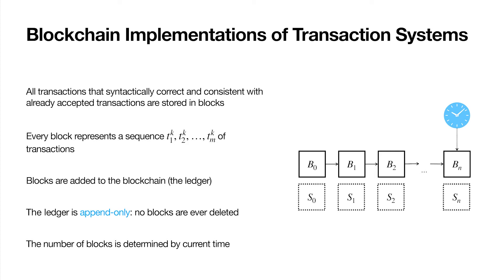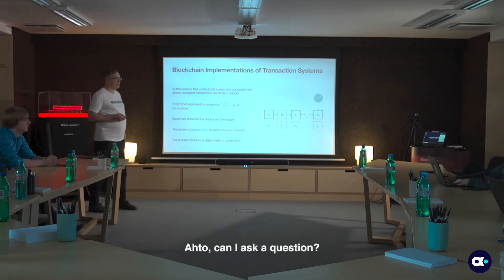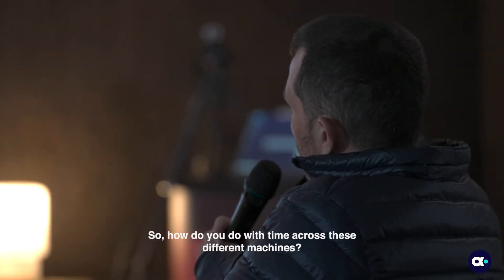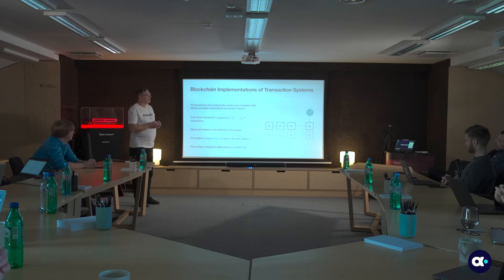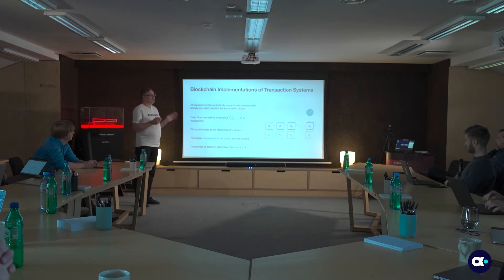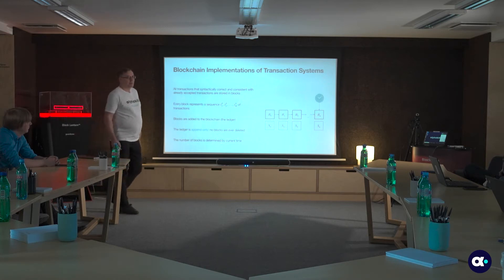In blockchains, blocks are created from transactions. There is a schedule based on a clock, on time. So if you know what the time is, we know how many blocks there should be. Regarding time synchronization across distributed machines — in Bitcoin, for example, the system synchronizes itself. There is a world time, and by that we know approximately how many blocks there should be. Bitcoin is a kind of self-regulating mechanism to guarantee that a new block is created approximately every 10 minutes. There are different ways to guarantee this synchronous block creation.